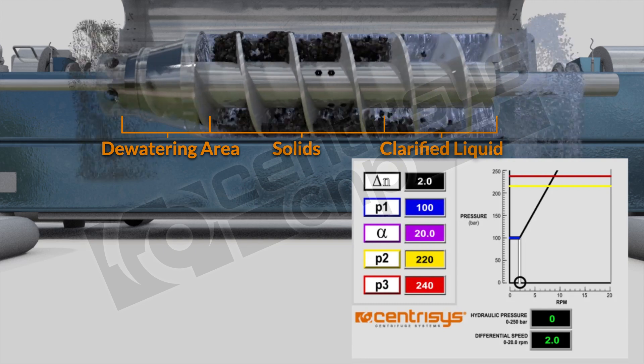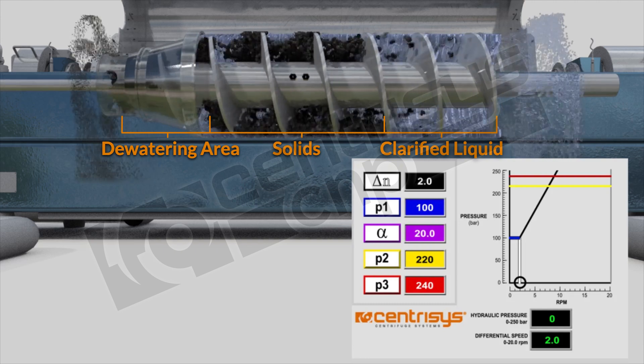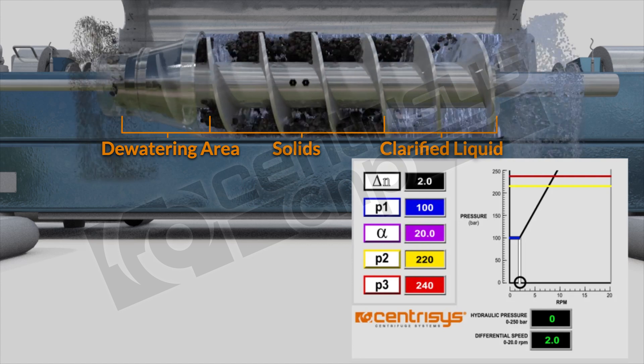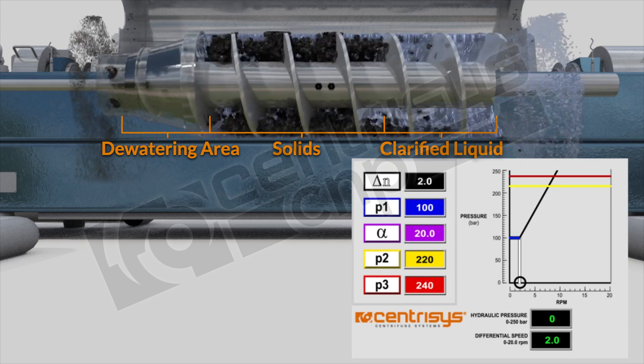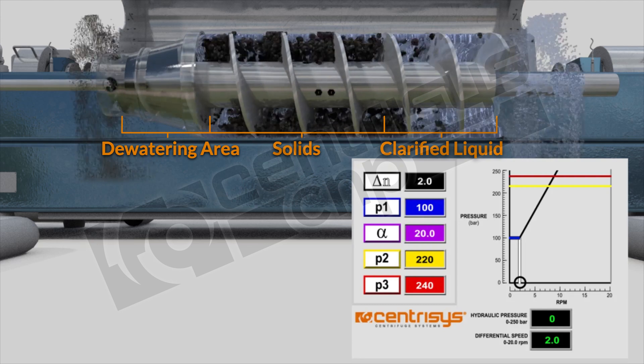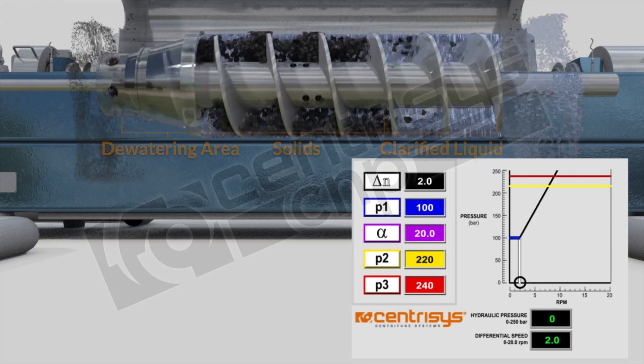The right hand side, the last third, will be the clarification area where the particles settle, and on the left hand side you have the dewatering area where the solids are being pushed up this cone and exit the centrifuge.